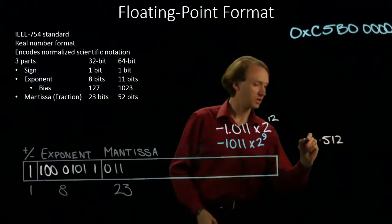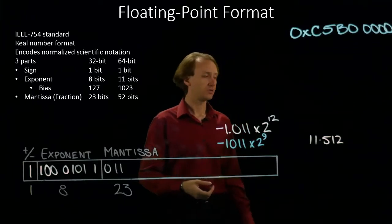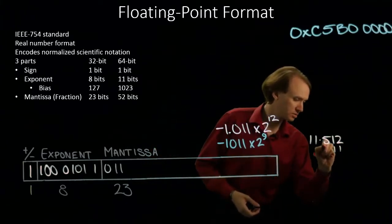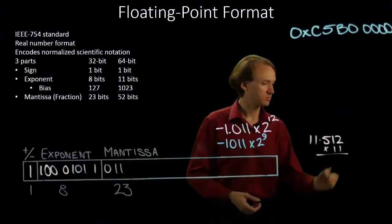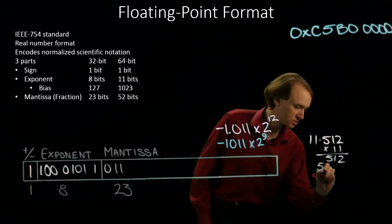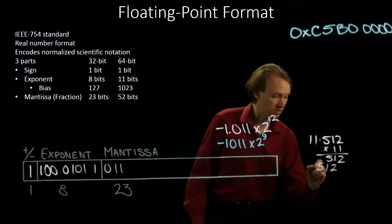And I know that this is 11, so really I want to do 11 times 512, which is reasonable to do by hand. 11 times 512 is 5,120 plus 512.